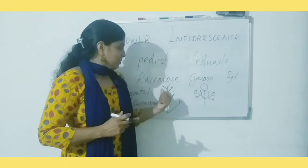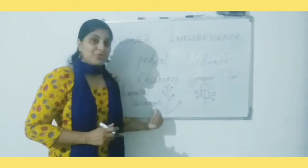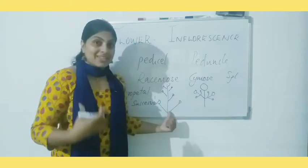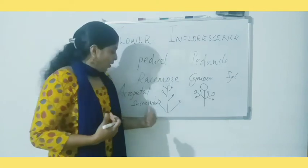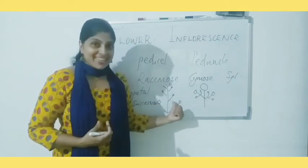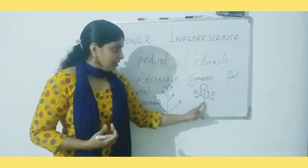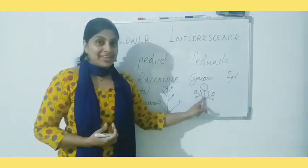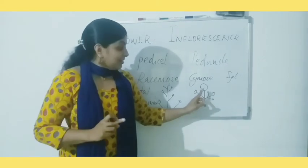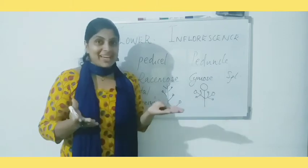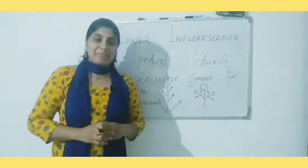Racimose and cymose are two different types of inflorescence. In racimose, the arrangement of flowers shows older flowers towards the basal side and younger ones towards the topmost region of the peduncle — flowers are arranged in acropetal succession. In cymose, the main axis growth is stopped by a single flower and next flowers are born on side branches — this arrangement is known as basipetal succession.